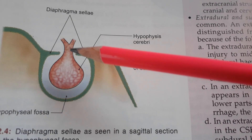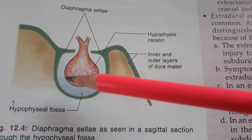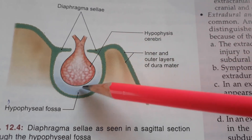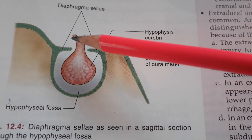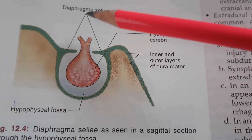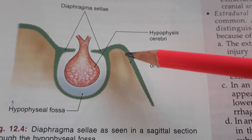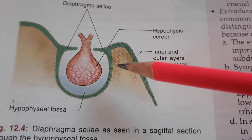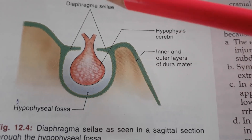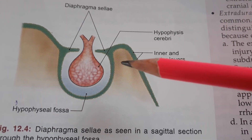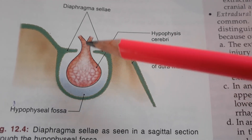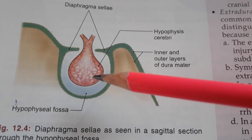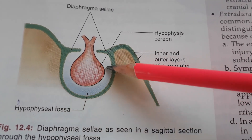Its location: it lies in the hypophyseal fossa, one more name for which is the pituitary fossa. The pituitary gland has above it a stalk which pierces the diaphragma sellae. The diaphragma sellae is a fold of the meningeal layer of the dura mater — the dura mater has two layers, the outer endosteal layer and the inner meningeal layer, which is folded into compartments. The stalk of the pituitary gland pierces the diaphragma sellae and reaches the floor of the third ventricle.